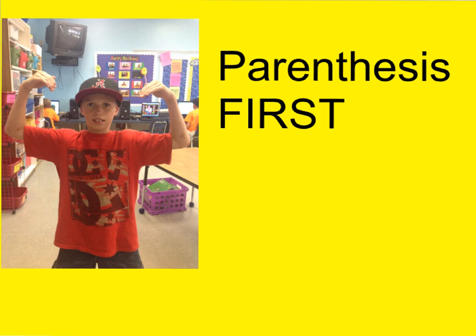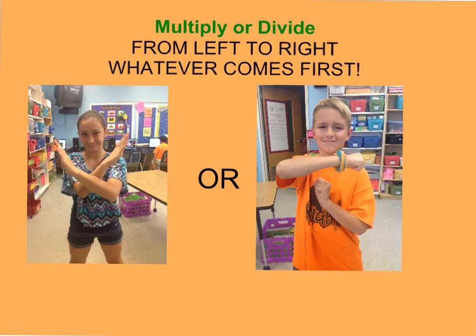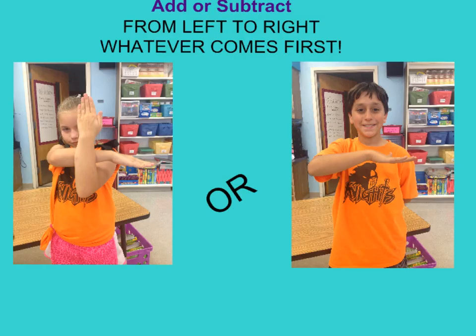Now in class tomorrow we'll be talking about different hand motions to help us remember. But I want to go ahead and show you: if you use parentheses first, then if there are exponents in your equation, you do those after you've done everything inside parentheses. Then, from left to right, whatever comes first, you'll either multiply or divide. This part's very important — you want to multiply or divide whatever comes first from left to right. Then you want to add or subtract from left to right.